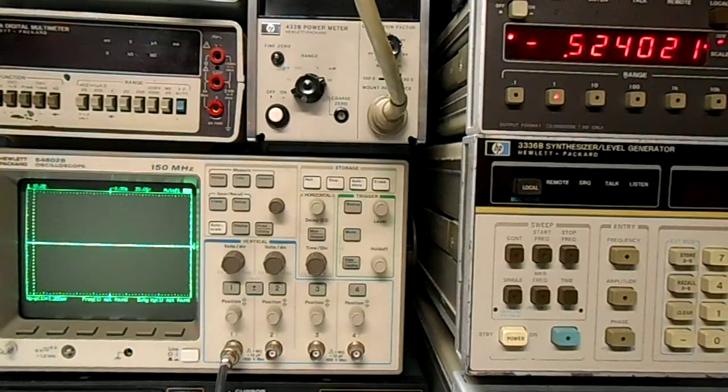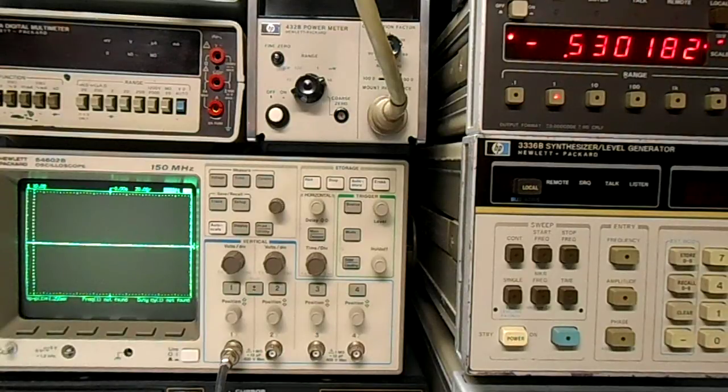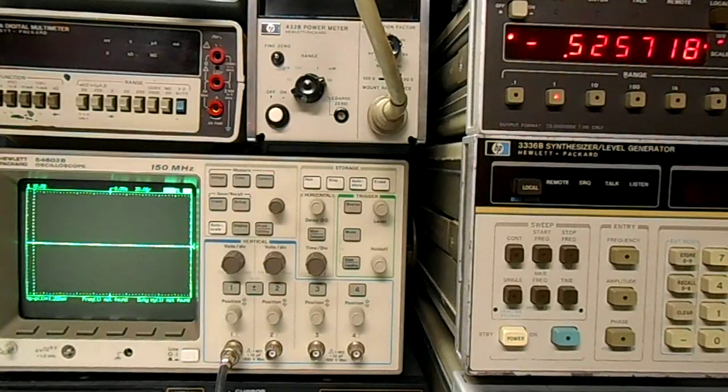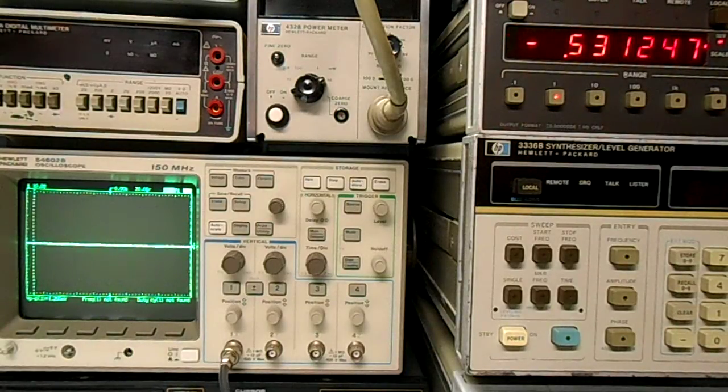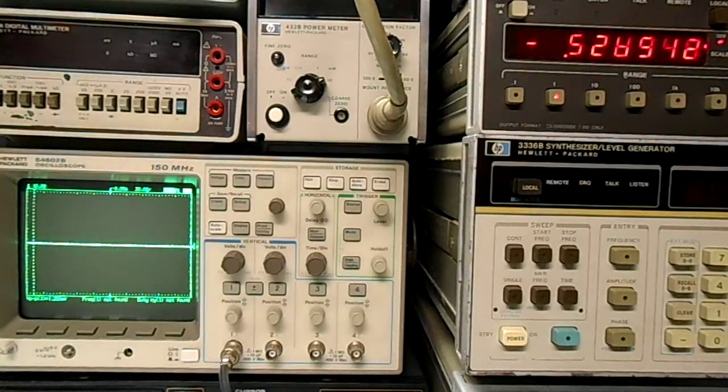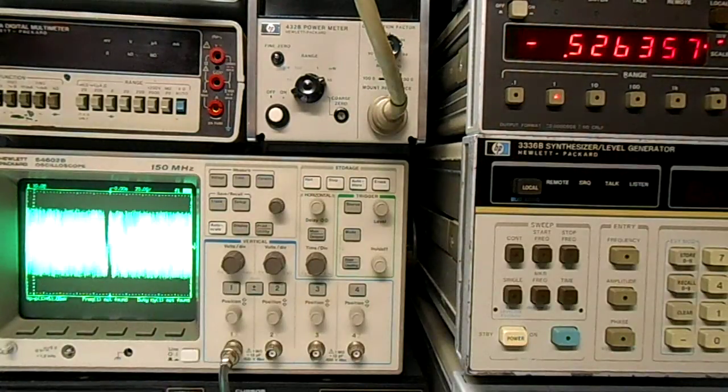I have a signal generator set up, 10.7 megahertz. I'm going to step from negative 100 dBm to plus 10 dBm and you can watch it on this voltmeter up here that's connected to the meg volts output.